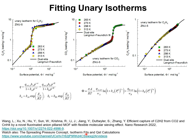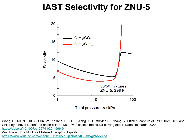The temperature-dependent Langmuir-Freundlich parameters are available in this publication. For further information on the concept of the surface potential, watch my video on this topic, and see also the presentation on how to fit unary isotherms and calculate the isosteric heat of adsorption. We proceed further with analyzing mixture separations in ZNU-5, where C2H2 has a very strong isotherm inflection, and this has severe consequences for the adsorption selectivity for 50-50 mixtures.